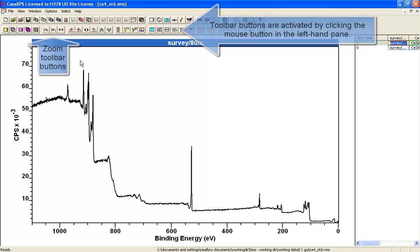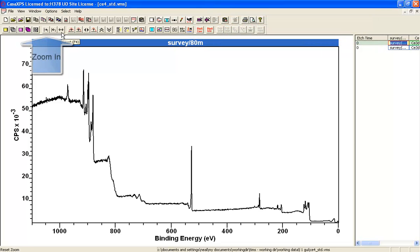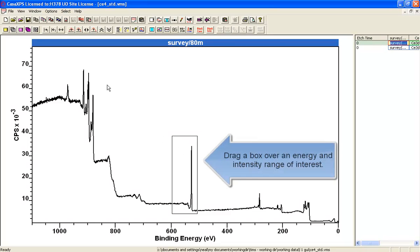If we click on the left-hand side, these two toolbar buttons become active, and these toolbar buttons are to manage zoom states within a survey spectrum. If I draw a box that encloses a set of data in terms of energy and intensity, when I press the zoom button, zoom in,